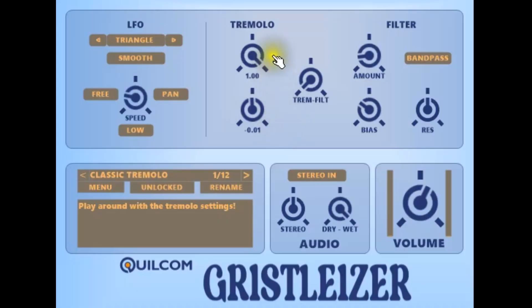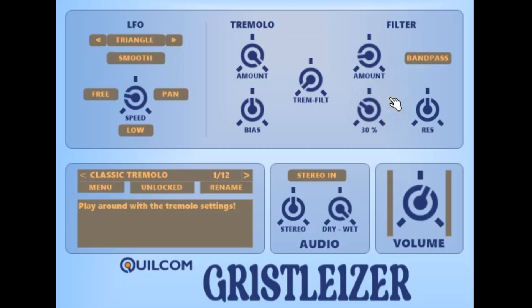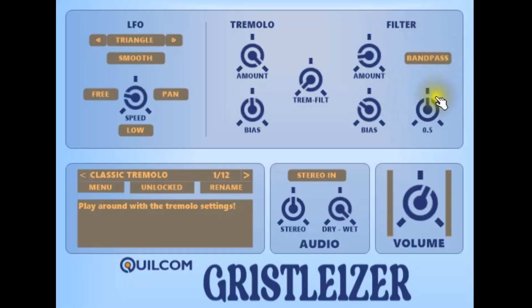On the original, this was called VCA — voltage controlled amplifier. The filter, or VCF — voltage controlled filter, has similar settings for the amount, which is the depth of modulation of the cutoff frequency, and the bias, which is the operating point for the filter without modulation. I've enhanced that by providing low-pass and high-pass as well as band-pass, and I've provided a resonance control, which together give a much wider range of possibilities.